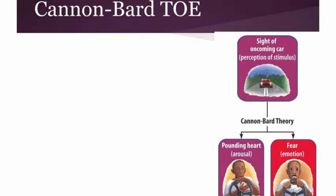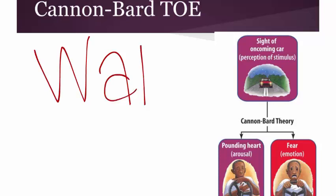The second theory is the Cannon-Bard theory of emotion. Walter Cannon should be a familiar name — we covered him when discussing motivation and the Washburn and Cannon experiment, where they swallowed a balloon to measure stomach contractions and hunger pangs. Walter Cannon is a big name across many areas of psychology. Bard, like Lang, is less prominent, which is why he doesn't go first in the hyphenated name. They didn't work together but arrived at the theory at the same time.